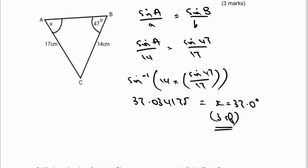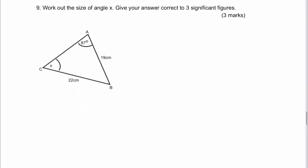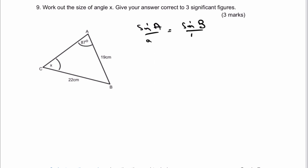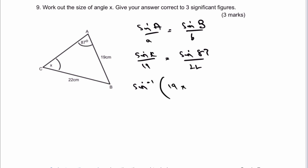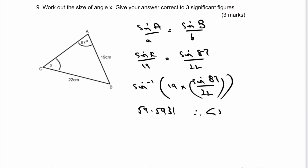Question nine: work out angle x. I'll ignore the given label and write sine A over A equals sine B over B. So sine x over 19 equals sine 87 over 22. Multiply both sides by 19 and use the inverse trig function: sine to the minus one of (19 multiplied by sine 87 over 22). Don't forget your brackets. That gives 59.5931, so angle x equals 59.6 degrees to three significant figures.